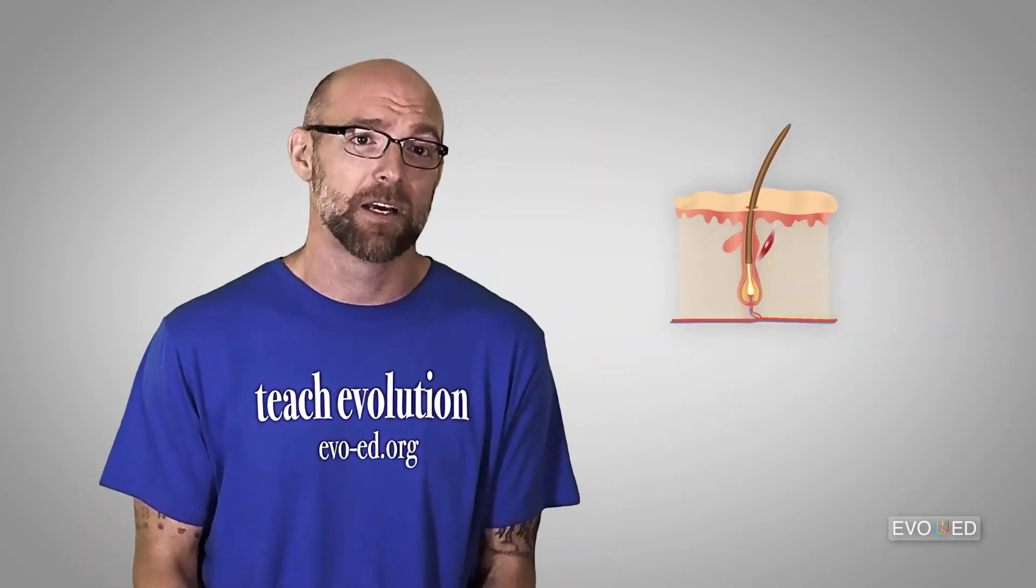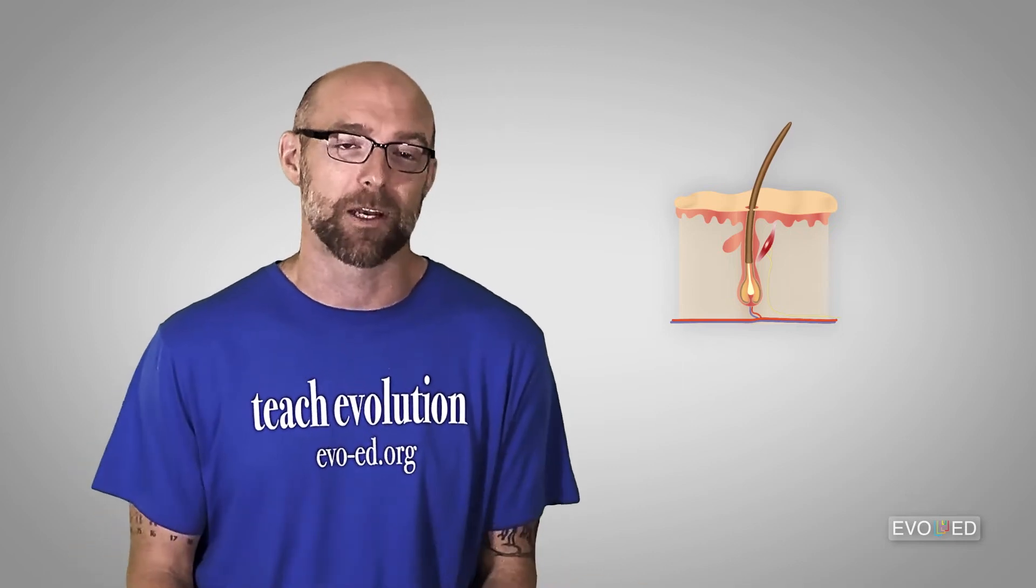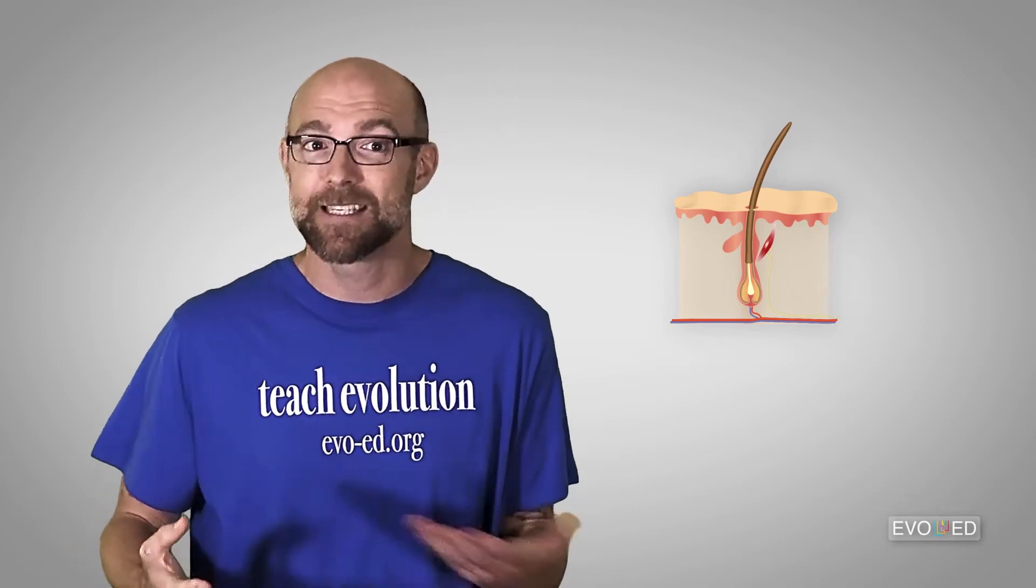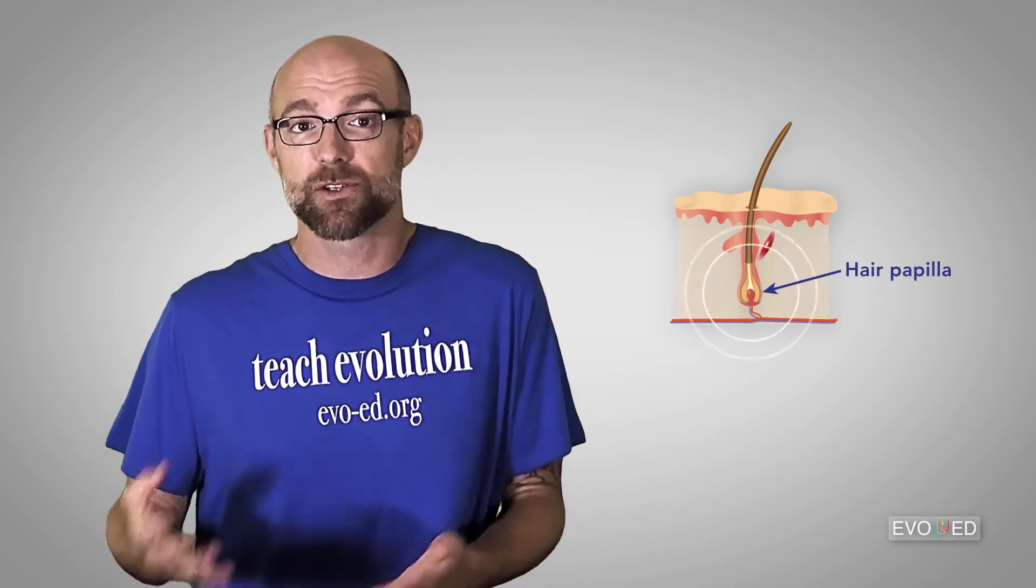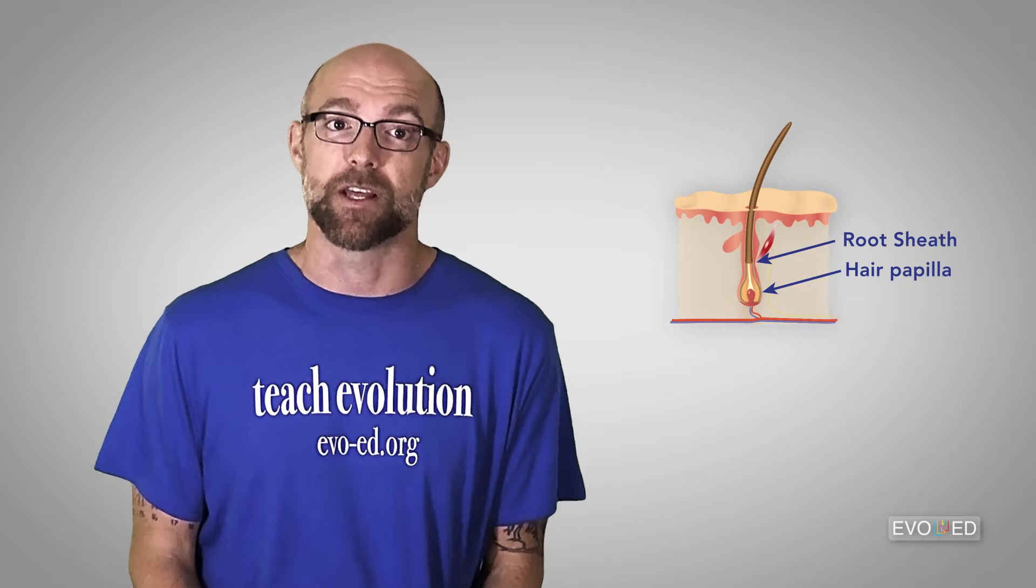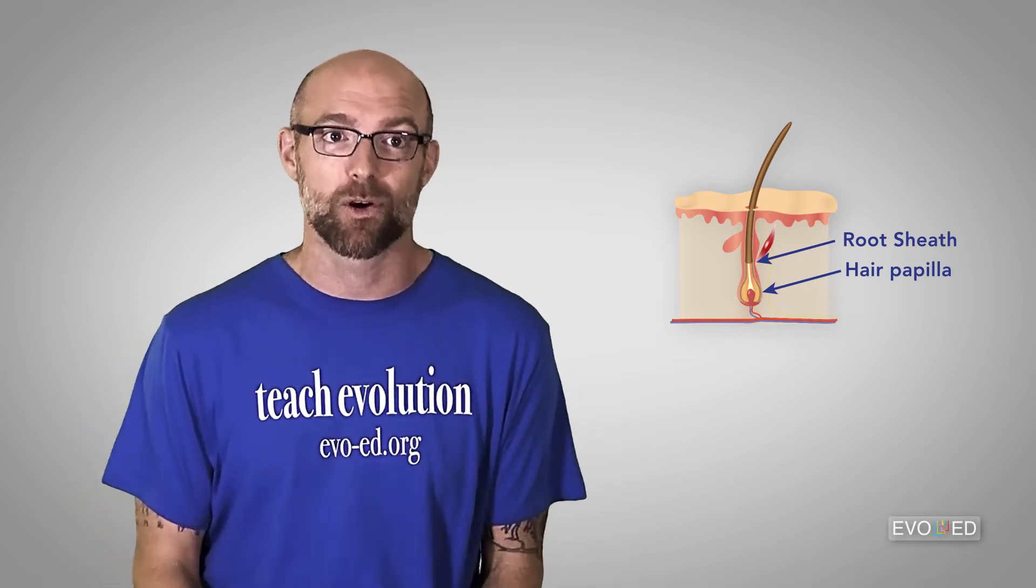The hair follicle is actually a type of organ that our bodies have. Some people might call it a mini-organ. It has specialized tissues or cell types like the hair papilla that helps to control hair growth. There's also the root sheath that surrounds and protects growing hair.